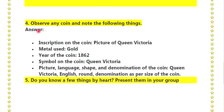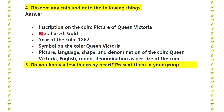Question No. 4: Observe any coin and note the following things. See the picture of the coin in the textbook. The inscription on the coin shows a picture of Queen Victoria. Metal used: gold. Year of the coin: 1862. Symbol on the coin: Queen Victoria's picture. Language: English. Shape: round. Denomination: as per the size of the coin.